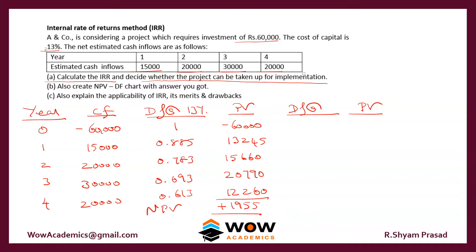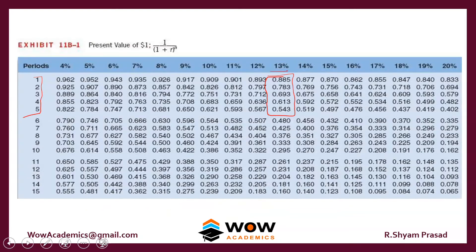If the NPV comes out as a positive number at the first rate, the NPV at the next attempt must go to a negative number, and vice versa. So since we got a positive NPV at 13%, we will increase the discount rate to 17% and see how the answer works.